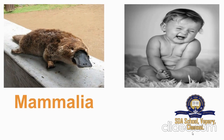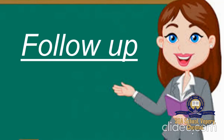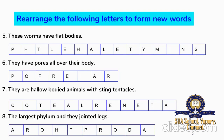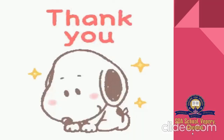For your follow-up work, there is an activity: rearrange the following letters to form the correct word. I have given you eight words with hints. For example, the first hint is 'they are covered with spines and have tube feet.' Take down your answers in your rough note, take a picture, and upload it in Google Classroom. Thank you so much, students — stay cool and stay safe. God bless you.